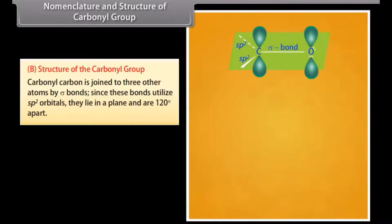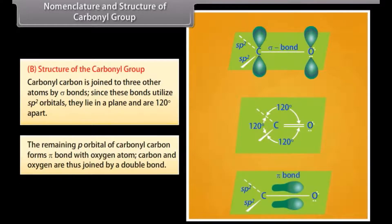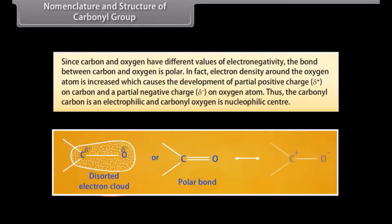Structure of the carbonyl group. The carbonyl carbon is joined to three other atoms by sigma bonds. Since these bonds utilize sp² orbitals, they lie in a plane and are 120° apart. The remaining p orbital of carbonyl carbon forms a pi bond with the oxygen atom, so carbon and oxygen are joined by a double bond. Since carbon and oxygen have different electronegativities, the bond is polar, causing partial positive charge on carbon and partial negative charge on oxygen. Thus, carbonyl carbon is an electrophilic center and carbonyl oxygen is a nucleophilic center.